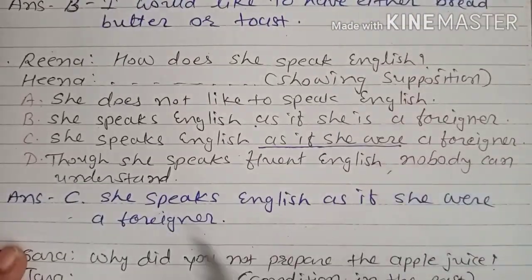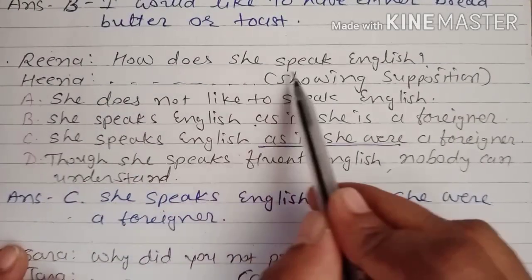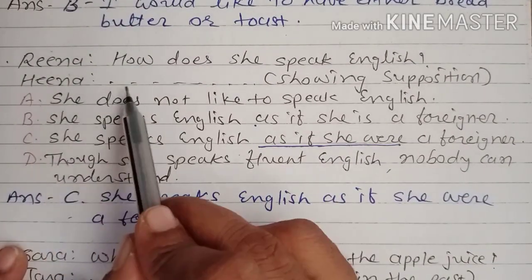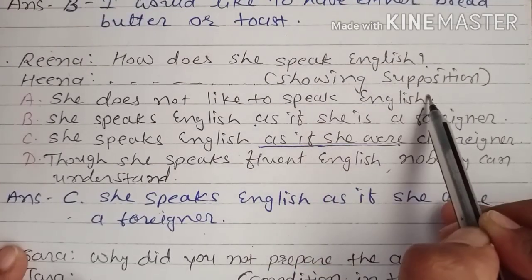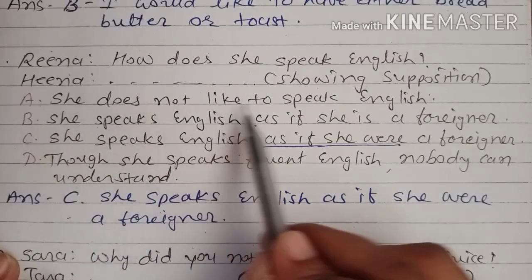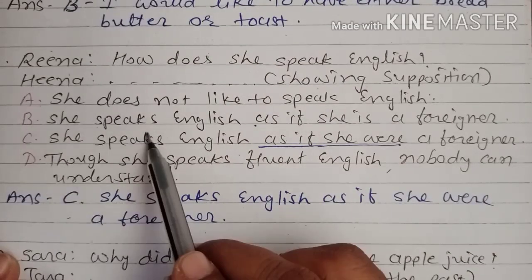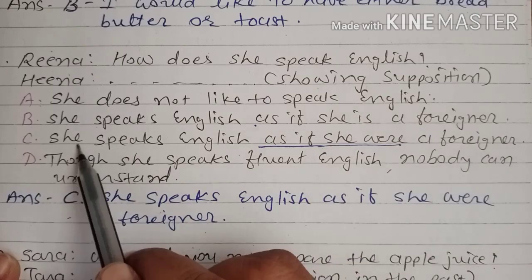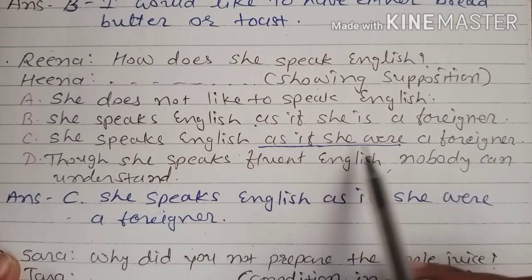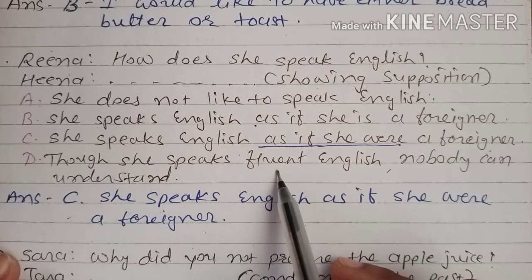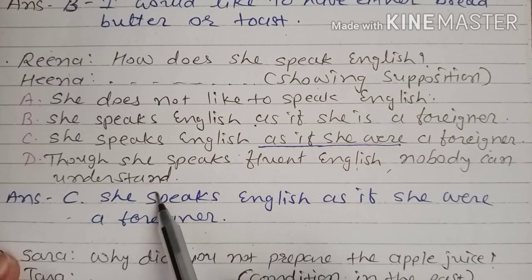Second dialogue: 'Here is Rina. How does she speak English?' The function required is supposition. The correct answer is: 'She speaks English as if she were a foreigner.' The keyword 'as if she were' (past subjunctive) expresses supposition. Other options like 'She does not like to speak English' or 'Though she speaks fluent English, nobody can understand' do not express supposition.